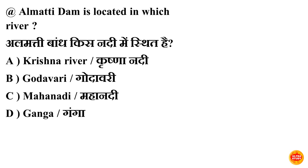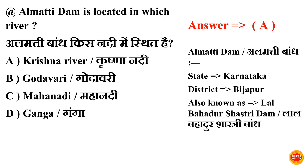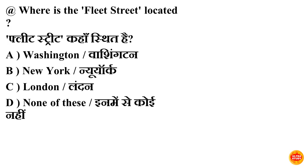Next question: Almatti Dam is located in which river? Almatti bandh kis nadi mein sthit hai? Option A is correct — Krishna River. Almatti bandh Krishna nadi mein sthit hai. State hai Karnataka, district hai Vijayapura district. Almatti bandh ko Lal Bahadur Shastri bandh bhi kaha jata hai.